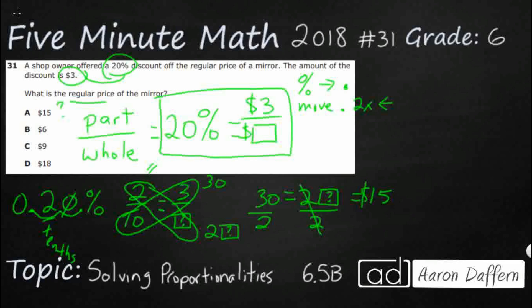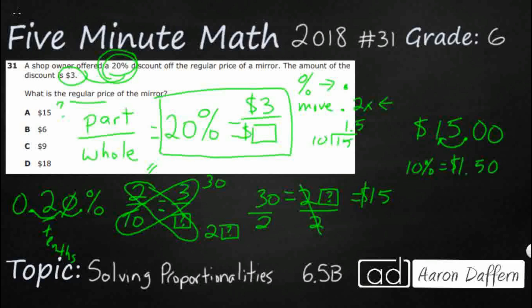So how could we double check? Here is a quick tip: we have a 20% discount. You can always find 10% by moving the decimal over once. So let's take fifteen dollars — 10% of fifteen dollars equals $1.50. Now you double that, because doubling 10% gets you 20%, and you get three dollars — which confirms our answer.